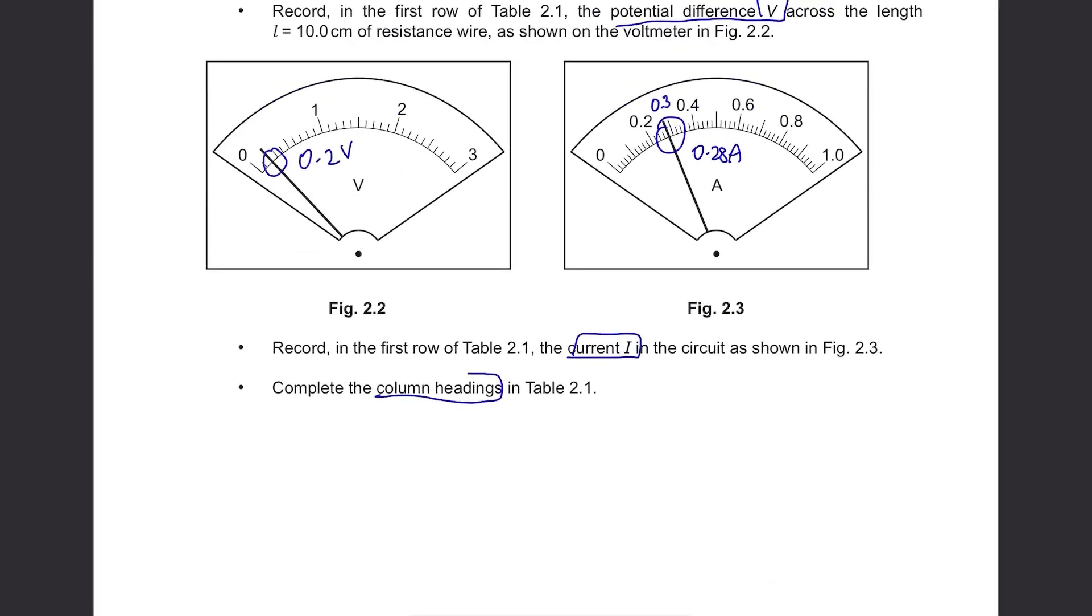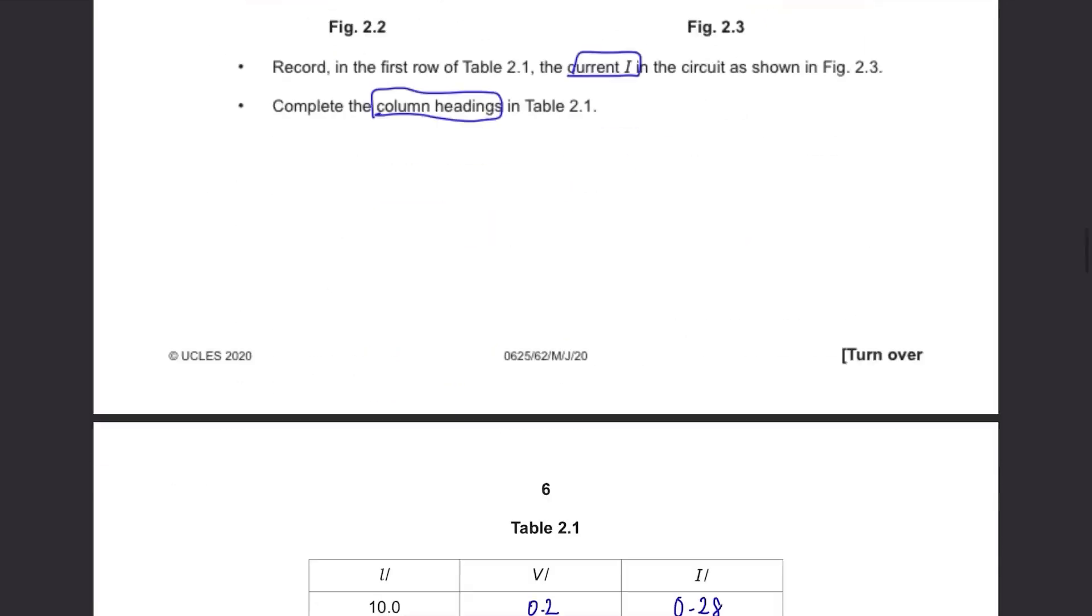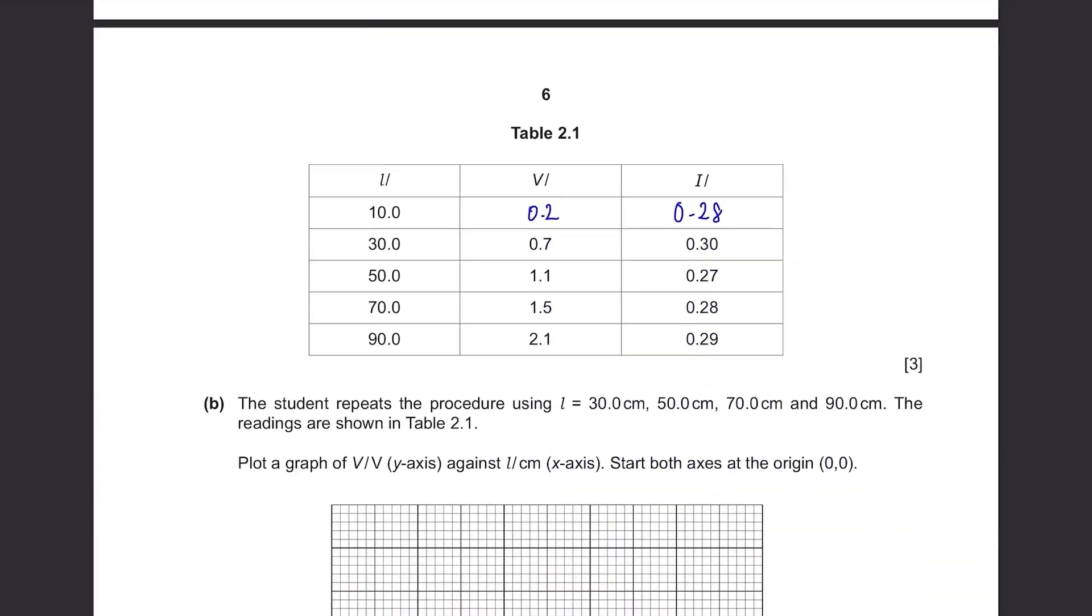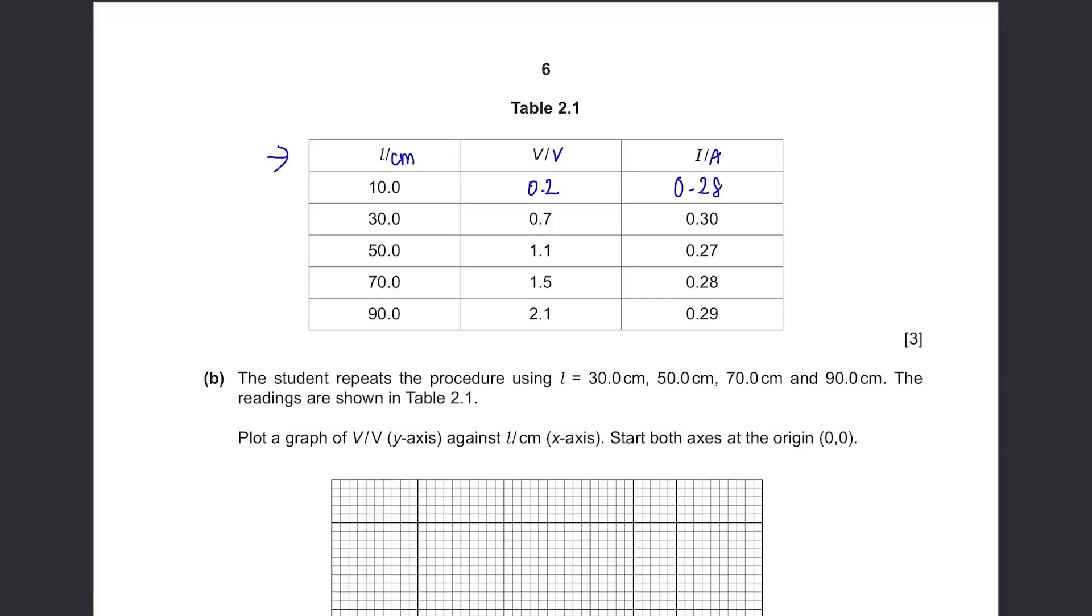Complete the column headings in table 2.1. You can see that the units are not written in their headings so write those here. L is length, V is voltage in volts and I is current in amperes.